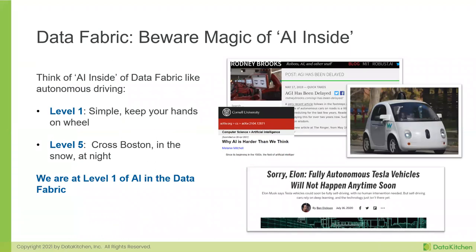Think of levels of AI like self-driving vehicles. Level one is a sunny day on a freeway with not a lot of construction — you keep your hands on the wheel. We actually have that now. But I don't think I'll be taking any autonomous vehicle in Boston in the winter during construction on a slushy wet night. We're at sort of level one of AI in the data fabric. Don't expect your data fabric to pour data in and get it assembled in an analytically friendly, well-governed way without a lot of people doing the work.